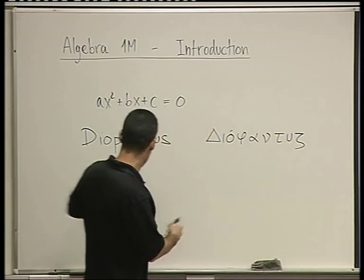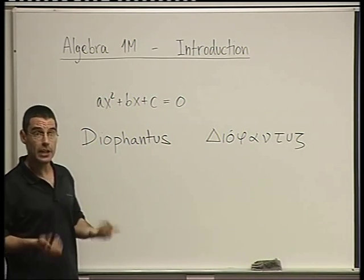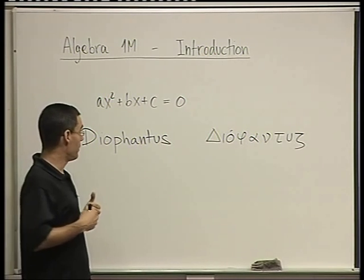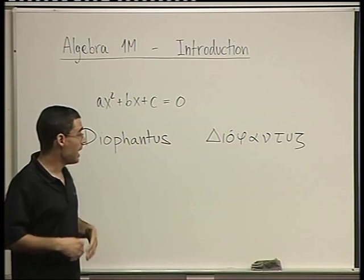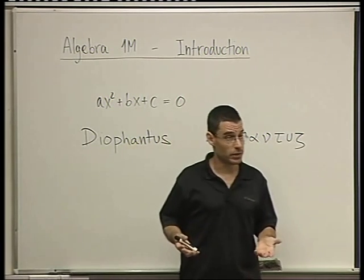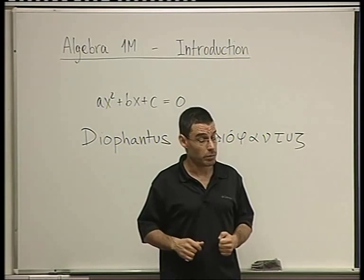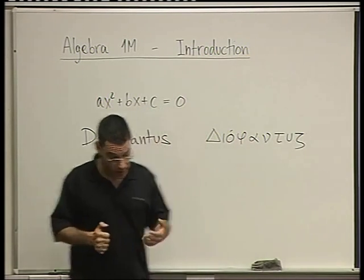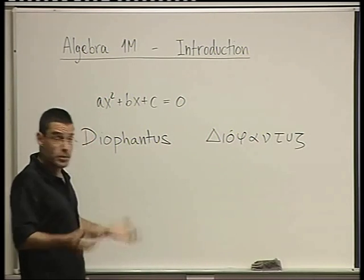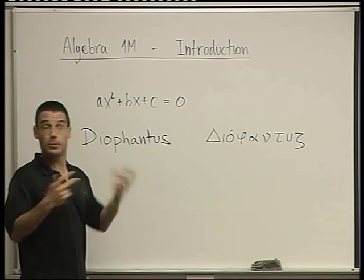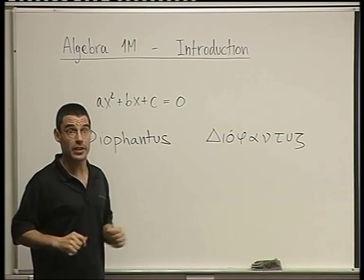The methods that we're going to see in algebra were developed for all sorts of mathematical structures, and many of them we're going to discuss in this course. For example, polynomials, which you may know already. For example, matrices. For example, vectors. All these are mathematical objects on which we can do calculations. We can add, subtract, multiply in various ways. That's algebra.